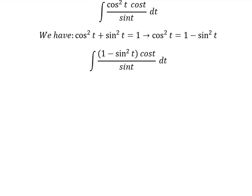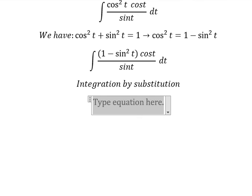So I will put z equals to sin t. Later that, we do first derivative for both sides, and we have dz equals to cos t dt.